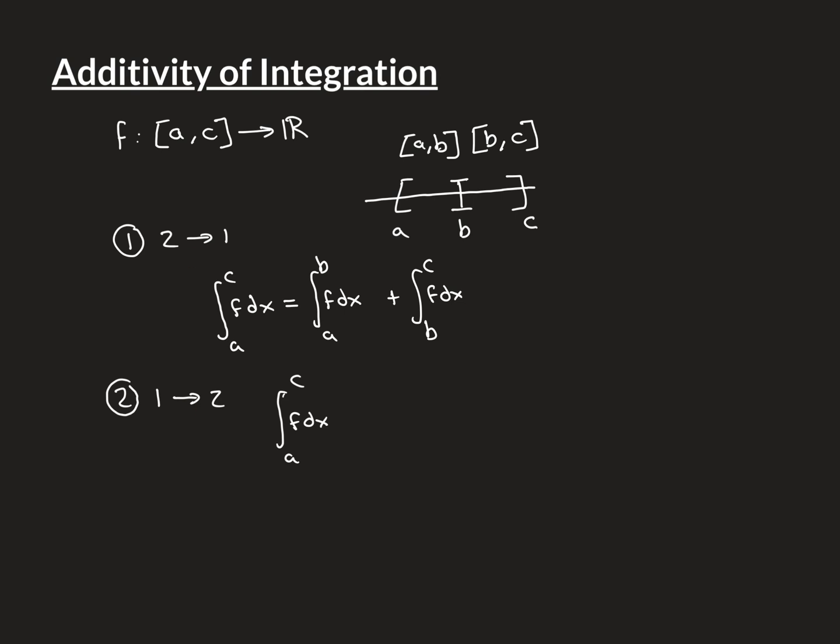Those are the two separate things we want to prove, and we'll start with part one. To prove part one we assume the function is Riemann integrable over [a, b] and over [b, c], and we want to show it is Riemann integrable over [a, c] with the integral value equal to the sum of the two. Before tackling that specifically, I want to talk about the approach we're going to take, because it's an approach used in previous videos and will be used many times in the future. It will pay to discuss it in general so it speeds up future explanations.